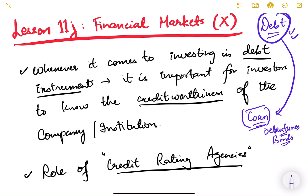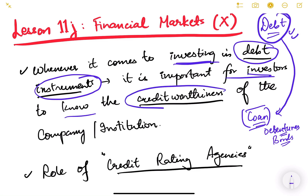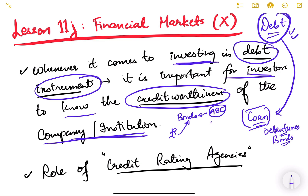Whenever it comes to investing in debt instruments like bonds and debentures, it is important for investors to know the creditworthiness of the company or institution issuing that debt. For example, ABC company is issuing some bonds to the public. People will think before investing whether this company will be able to pay back their money. If each bond is rupees 5,000 and a person invests rupees 50,000 by buying 10 bonds, he should have some guarantee that the company will pay back after one year. That is known as creditworthiness.